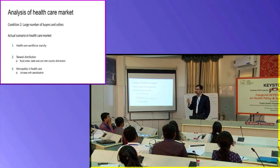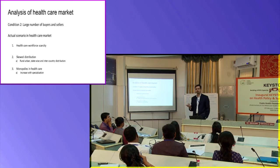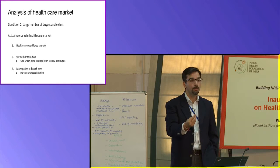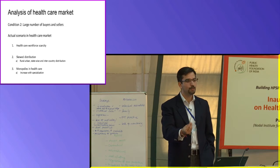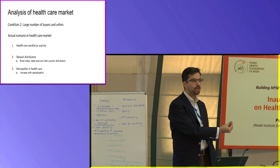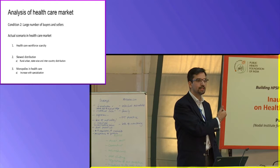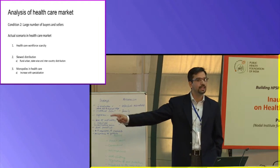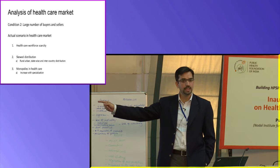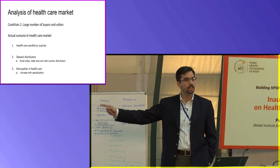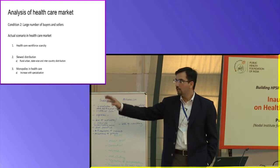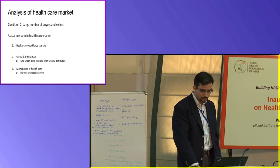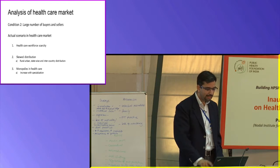If the cardiologist says he wants a lakh of rupees for an angiography, you have no choice but to pay — if you had the capacity to pay. The one who did not have capacity to pay gets excluded; that is a welfare loss, that is inefficient, and that is inequitable. So that is the violation of the second condition.